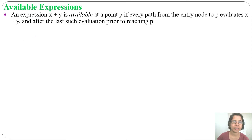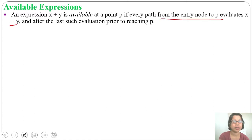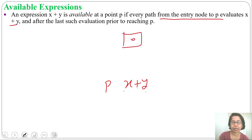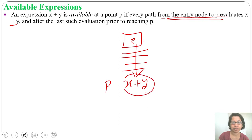For available expression: an expression x plus y is available at a point p if every path from the entry node to p evaluates x plus y, and after the last such evaluation prior to reaching p. If it is evaluated in every path from entry to point p, then we will say that x plus y is an available expression at point p.